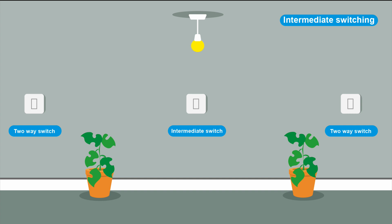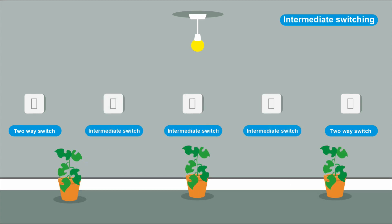Two-way and intermediate switching is where you can switch a light on from three or more positions. You might have a long corridor or hallway where you want to switch the light on at the beginning, end, and middle. You can add as many intermediate switches as you want to switch a light on from multiple positions.